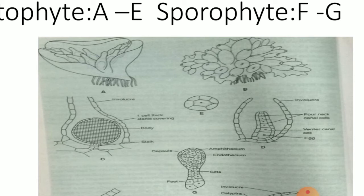On the ventral surface, scales are absent except near the growing point of the thallus, where some mucilaginous hair-like structures are present. The terminal end of each mucilaginous hair has a large swollen terminal cell. Tuberculate rhizoids are absent. The entire ventral surface is covered only by smooth-walled rhizoids.